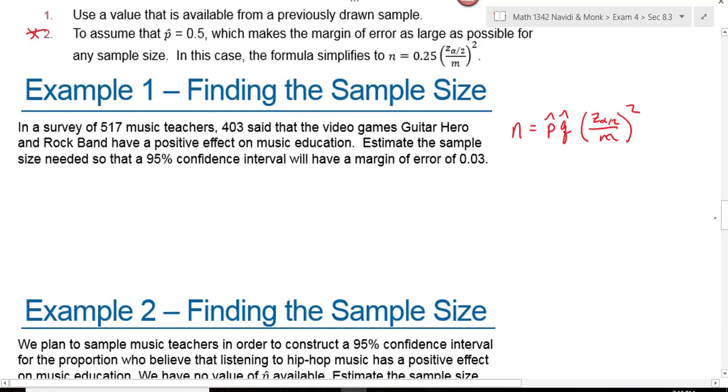So in the first example, we're going to assume we know something about P-hat and the next example we'll assume that we don't and see how that affects things. In a survey of 517 music teachers, 403 said that video games have a positive effect on music education. Estimate the sample size needed so that a 95% confidence interval will have a margin of error 0.03.